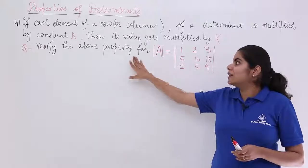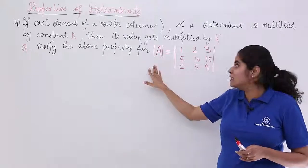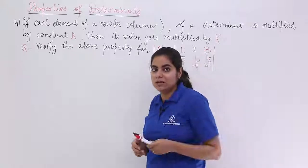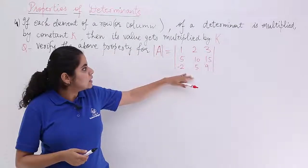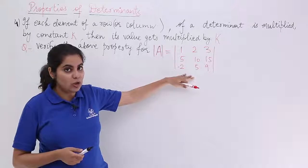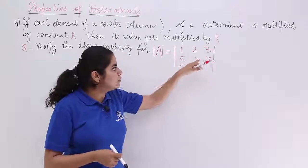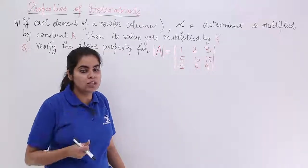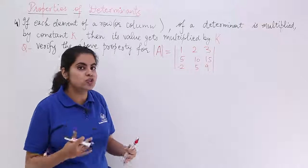You have to verify the above property for a determinant A which has certain entries. Now you can see that this determinant is a special type because 1, 2, 3, 5, 10, 15, these two rows are having some proportional elements.